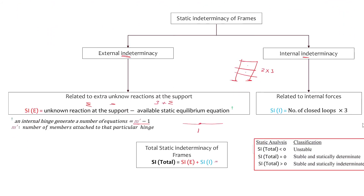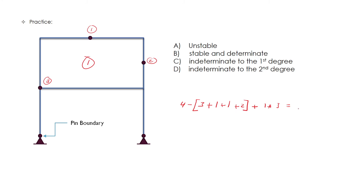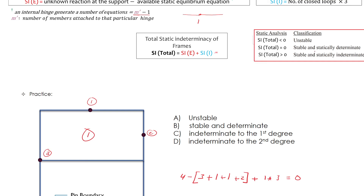As a quick practice, let's check the problem below. We have four unknown reactions minus three basic equations. There are three internal hinges: hinge 1 gives 1 equation, hinge 2 gives 1 equation, and hinge 3 gives 2 equations. We have one closed loop, so 1 multiplied by 3. The total is 0, which means it's stable and statically determinate.